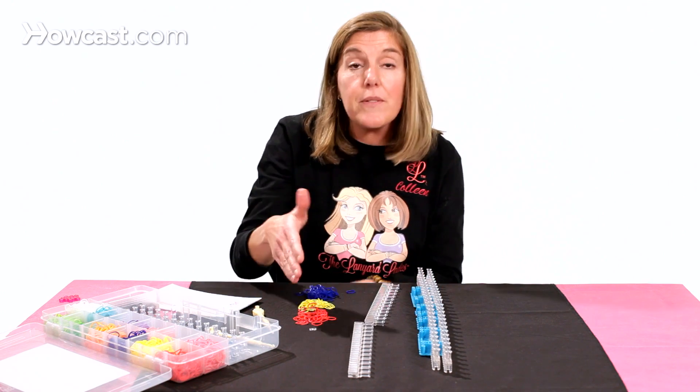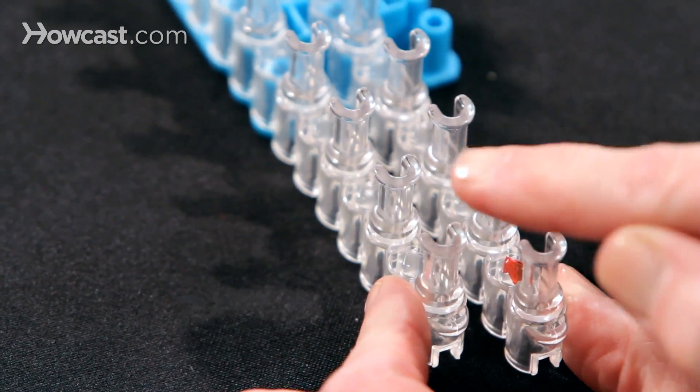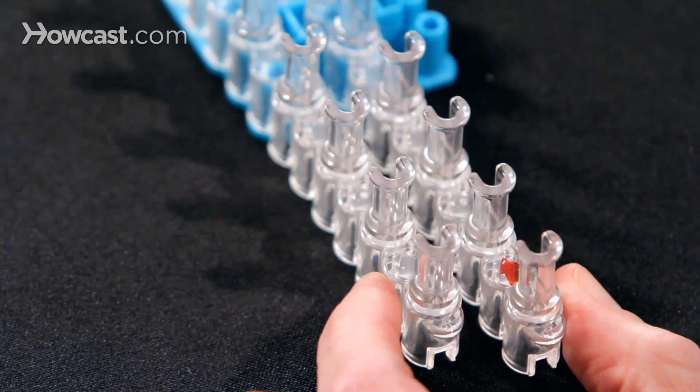And you'll need three colors of bands, a C-clip, and your hook. Before we start laying the bands, you want to make sure that the arrows are pointing away from you on both of the looms.